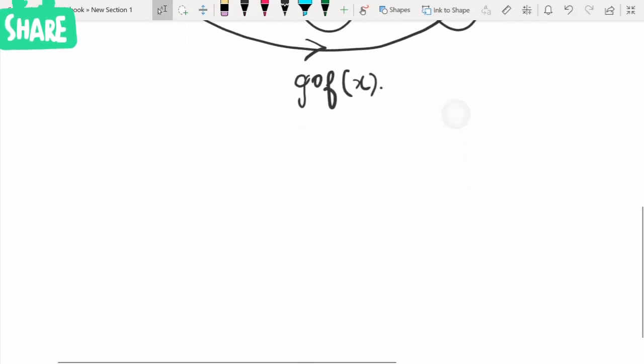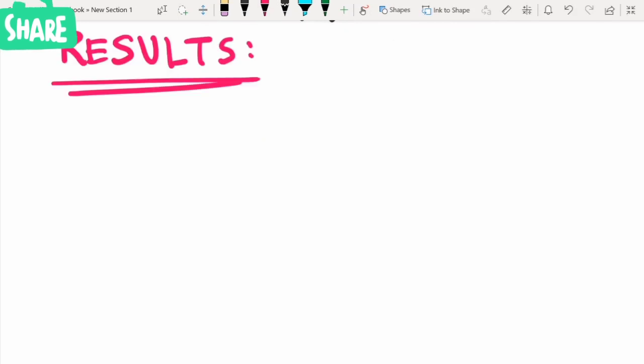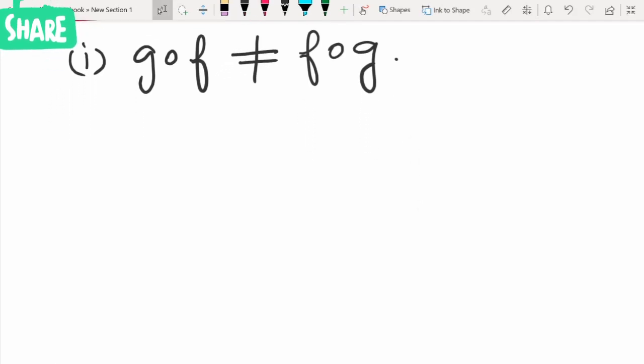Now what are the results on this composition functions? A composition function need not be commutative. That is, g composition f need not be equal to f composition g.